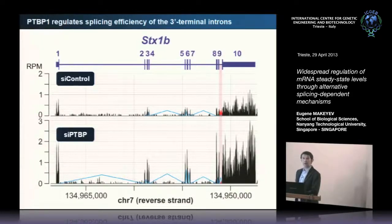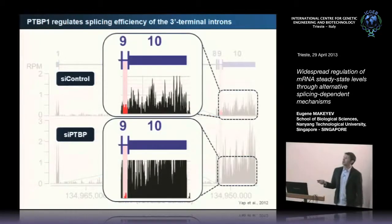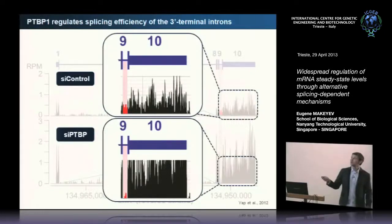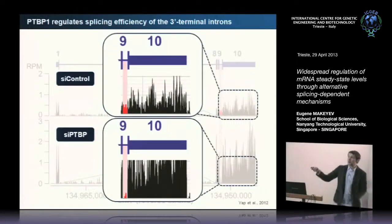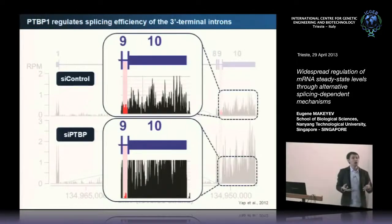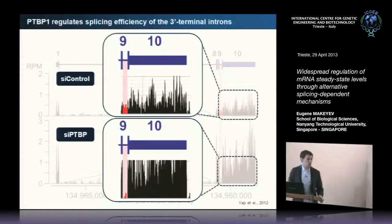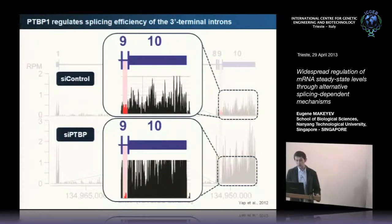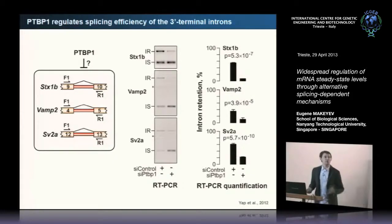One thing was quite interesting here and suggests a potential mechanism of regulation. When we focused on the last intron, we noticed a reciprocal change: exonic reads were undergoing up-regulation, but intronic reads corresponding to the last intron were down-regulated upon PTB knockdown. So PTB was doing something directly or indirectly to this intron that might be linked with changes in mRNA abundance. We tested this by RT-PCR to confirm that what we see by RNA-seq makes sense.